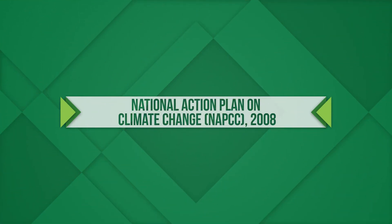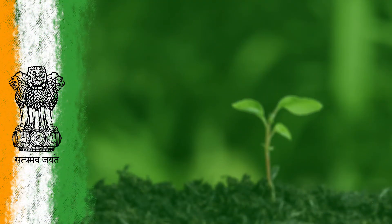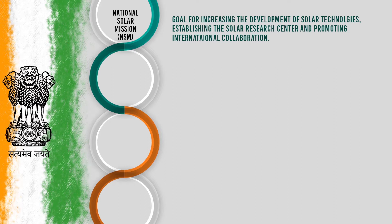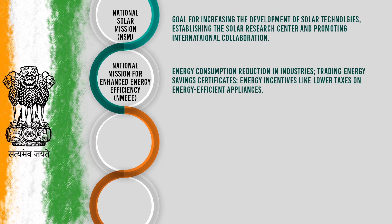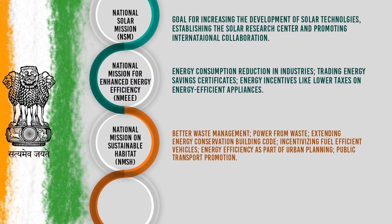The National Action Plan on Climate Change, also known as NAPCC 2008, includes: the National Solar Mission, with the goal of increasing the development of solar technologies such as increasing photovoltaic production to 2,000 MW per year, establishing a Solar Research Centre and promoting international collaboration; the National Mission for Enhanced Energy Efficiency, covering energy consumption reduction in industries, trading of energy saving certificates, and initiatives like lower taxes on energy efficient appliances; and the National Mission on Sustainable Habitat, covering better waste management, power from waste, extending energy conservation building codes, incentivizing fuel efficient vehicles, energy efficiency as part of urban planning, and public transport promotion.